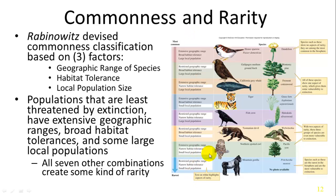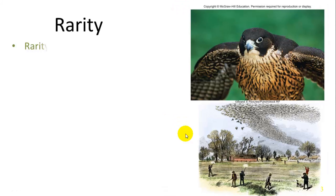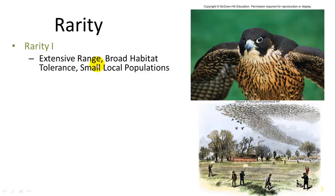Among the seven combinations, the top category — extensive range, broad habitat tolerance, and large local populations — is least likely to face extinction. The three factors most contributing to vulnerability are an extensive range and broad habitat tolerance but small local populations. For example, if you have wide range and broad tolerance but only small scattered populations, those local groups can be easily endangered.